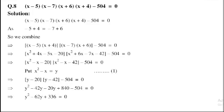So x² plus 4x minus 5x simplifies to x² minus x minus 20. Next, x² plus 6x minus 7x minus 42 simplifies to x² minus x minus 42. So minus 504 is equal to 0. Now put x² minus x equal to y, and replace: (y minus 20) into (y minus 42) minus 504 is equal to 0.